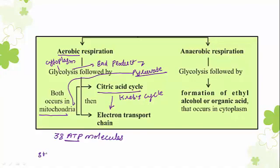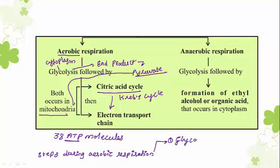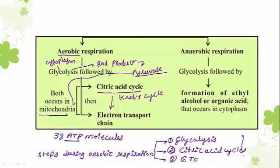The steps during aerobic respiration are: first, glycolysis — the common step for aerobic and anaerobic respiration; second, citric acid cycle or Krebs cycle; and third, electron transport chain. When these three steps are completed, there will be synthesis of 38 molecules of ATP.